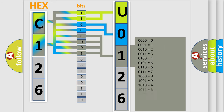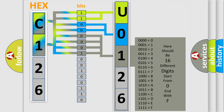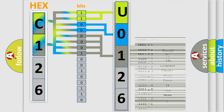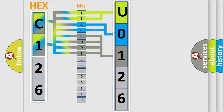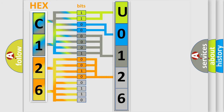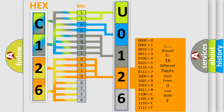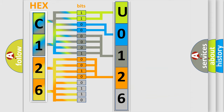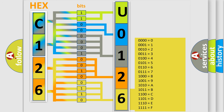The second byte is composed of a combination of eight bits. The first four bits determine the fourth character of the code, and the combination of the last four bits defines the fifth character. A single byte conceals 256 possible combinations.